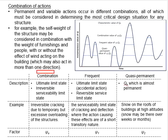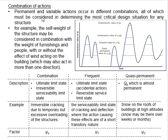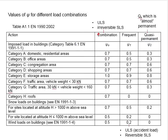The combination type refers to the ultimate limit state and also the irreversible serviceability limit state — for example, irreversible cracking due to temporary but not excessive overloading. The factor of safety to be multiplied with the accompanying variable is denoted as ψ₀, as given in the table, in accordance with the different categories of variable actions.